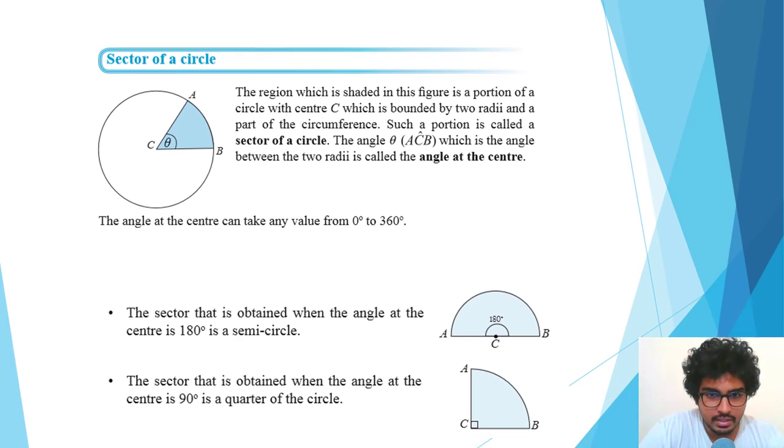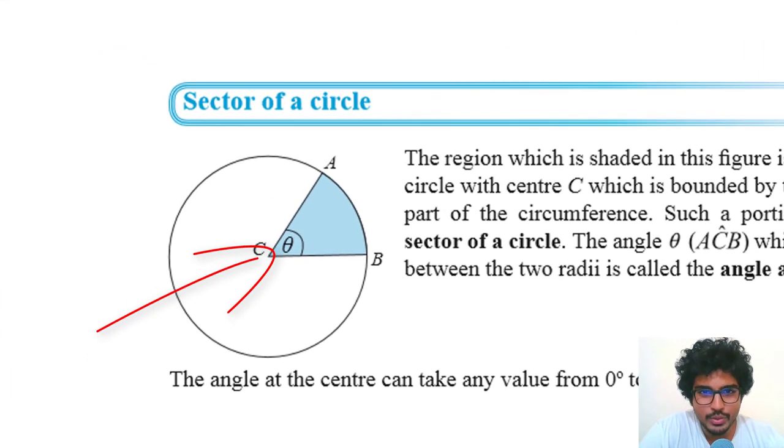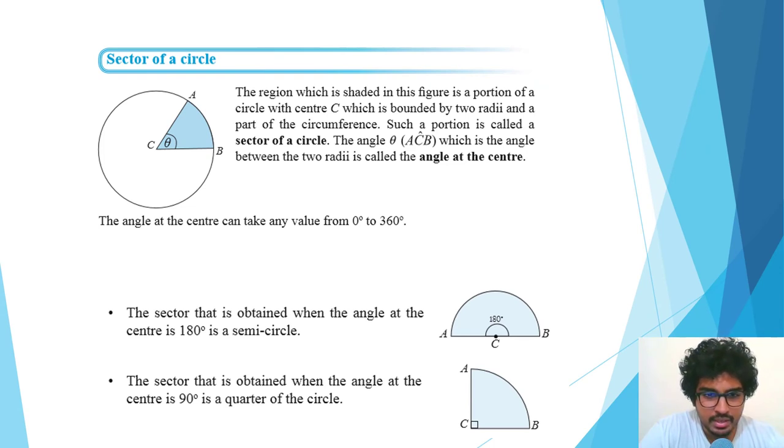The angle theta—this symbol might be new for you—theta is actually one of the Greek letters. We use this symbol to denote one of the angles. The angle theta is the angle between the two radii. C is the center of the circle, from C to A that's a radius, and from C to B that's another radius. Between the two radii is called the angle at the center.